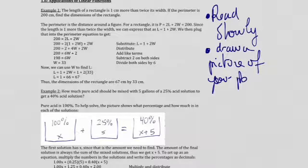So, let me read the first example for you, the way I think you should read the problem. The length of a rectangle is 1 cm more than twice its width. If the perimeter is 200 cm, find the dimension of the rectangle. As you can hear, I try to read slowly and put emphasis on words that I think are important. Obviously, you are not obligated to read with my French accent.